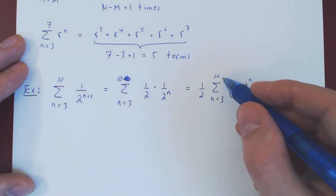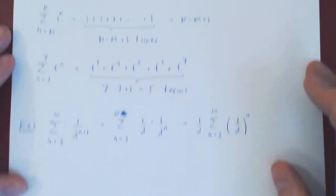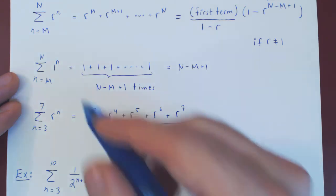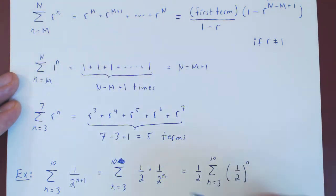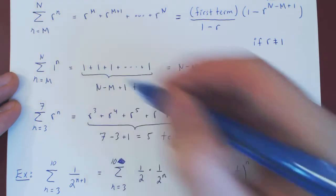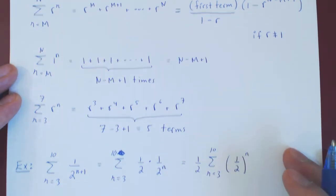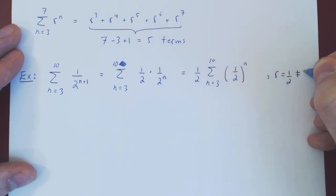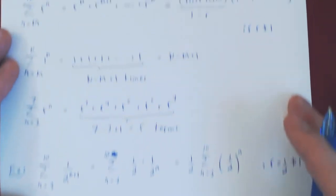And now we have a finite geometric sum, right? We are summing from 3 to 10, 1 half to the n, so here r is equal to 1 half, which is not 1, and so we can use our general formula.